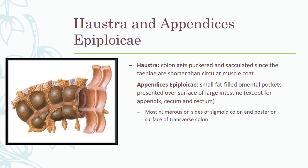Haustra are the sites where the colon gets puckered and sacculated because the teniae are shorter compared to the circular muscle coat. The teniae are shorter than the circular muscle coat, so the colon gets sacculated, forming outpouchings in these regions, and these outpouchings or sacculations are known as haustra.